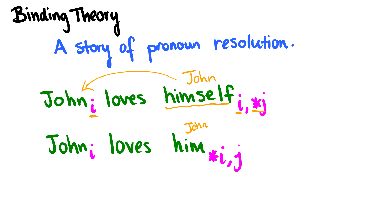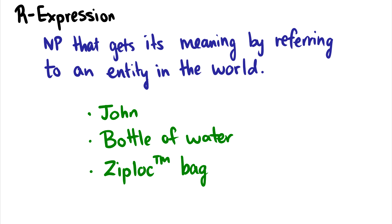Let's dig into the terminology a little bit. R-expressions are the first thing, and R-expressions stand for referring expressions. It's a somewhat unusual term, but essentially it means that some noun phrase gets its meaning from some entity in the real world. So for instance, 'John' is an R-expression because John in the real world points to some guy. 'Bottle of water' is an R-expression because it points in the real world to some bottle of water.